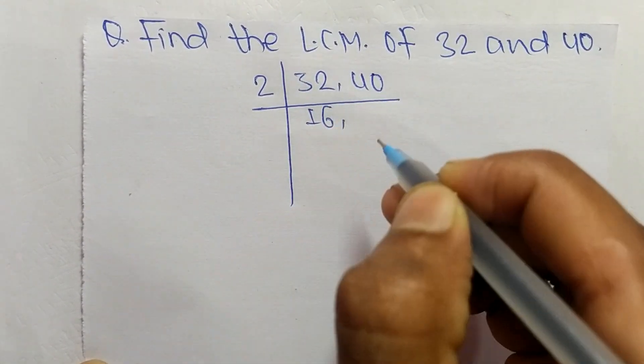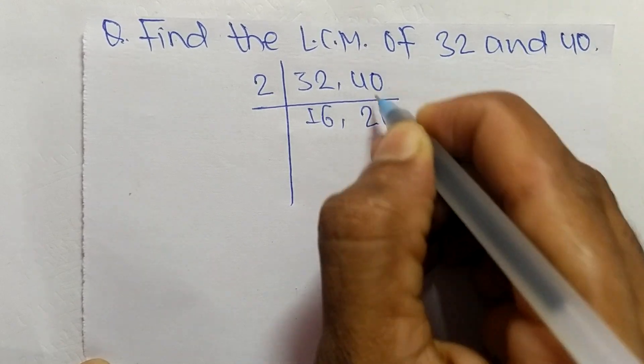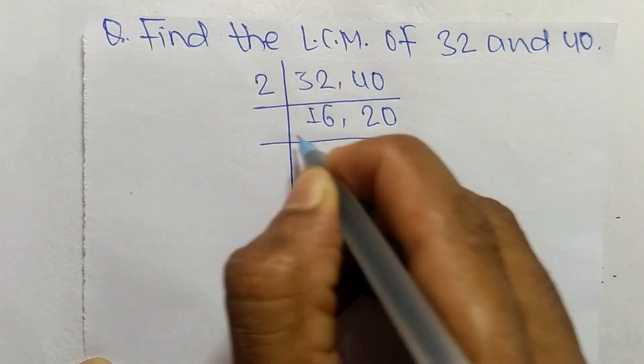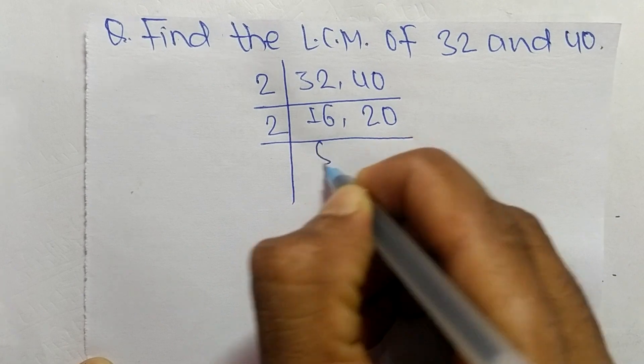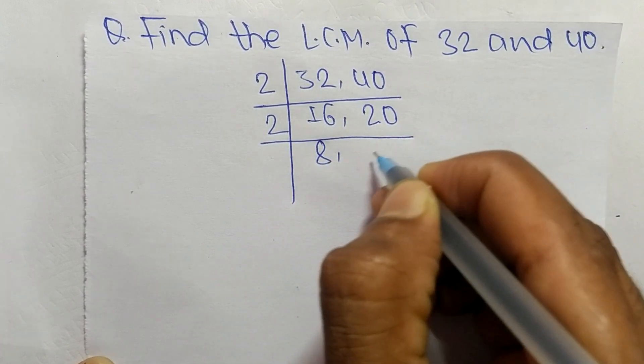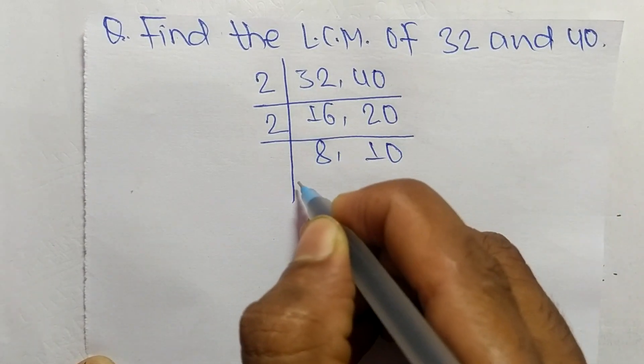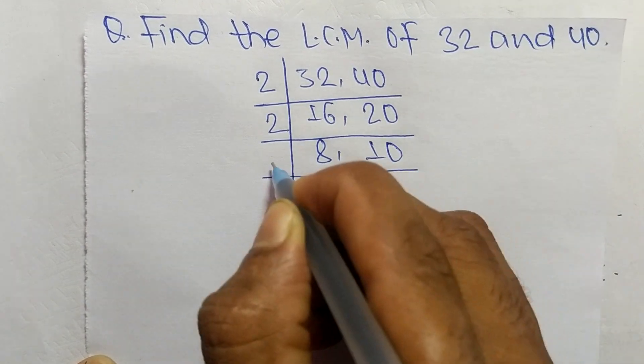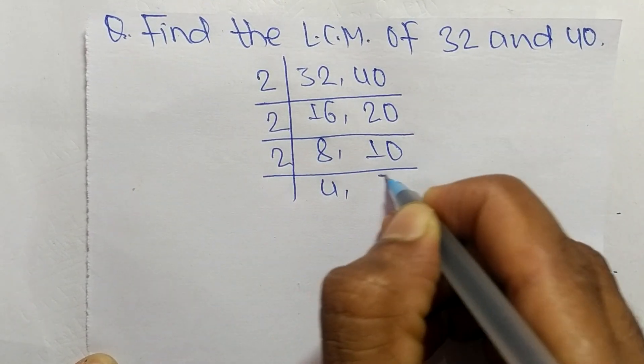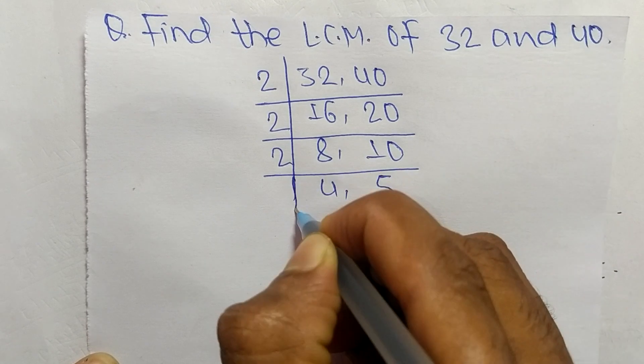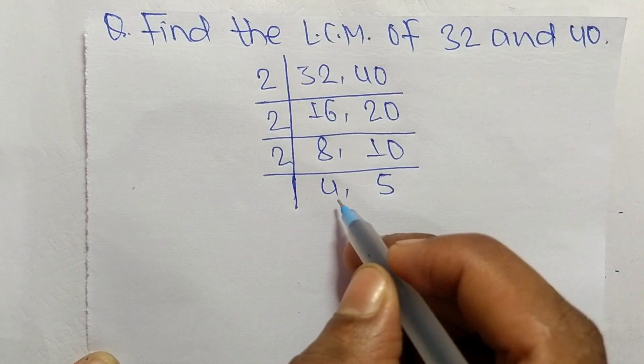2 times 16 equals 32, 2 times 20 equals 40. Then 2 times 8 equals 16, 2 times 10 equals 20. And 2 times 4 equals 8, 2 times 5 equals 10. So at last we have 4 and 5, which are not exactly divisible by any other numbers.